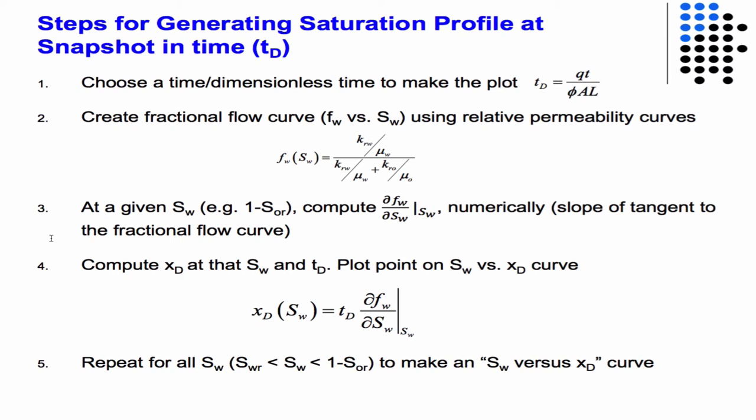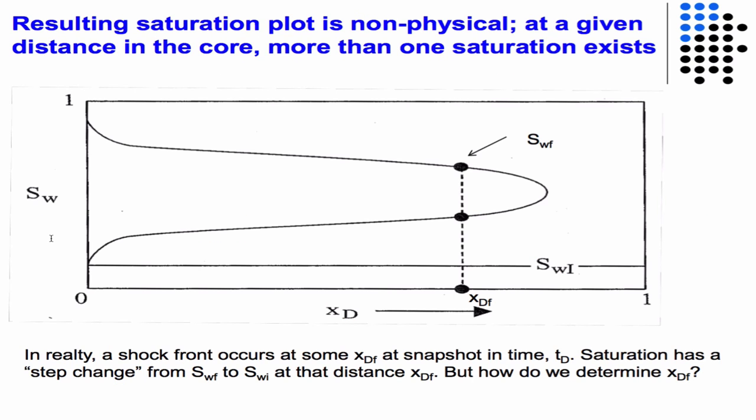The steps for generating the saturation profile are to choose a time and compute a dimensionless distance, create the fractional flow curve, compute the derivative of the fractional flow curve. Now that you know the derivative of the fractional flow curve and the dimensionless time, you can compute x for a given water saturation. You sweep through all water saturations from the beginning down to the residual saturation, computing x every time, and you produce a profile. That profile would look something like this. But one of these is a non-physical solution, so we want to get rid of those.